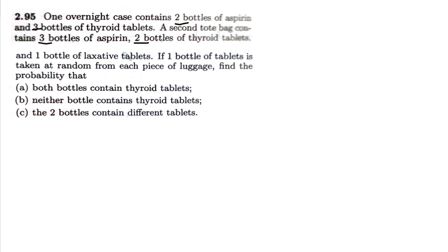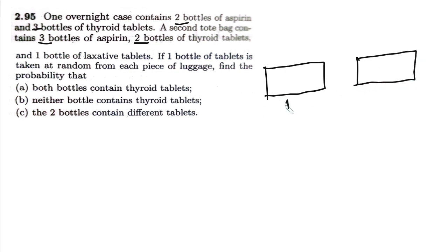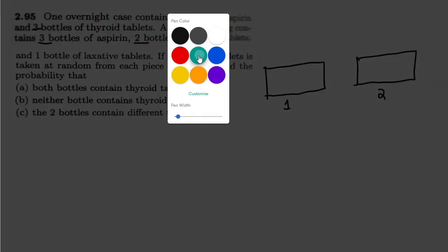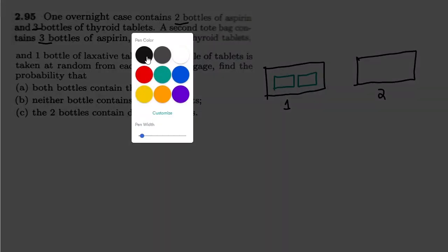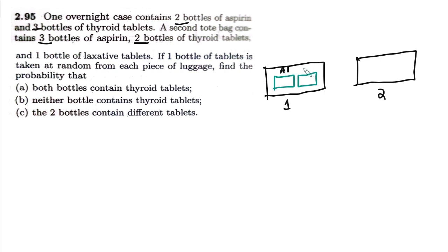So these are the two bags composed of these bottles of tablets. If one bottle of tablet is taken at random from each piece of luggage, we need to find the probability. Let me first explain the scenario: there are two bags — bag one and bag two. In the first bag we have two bottles of aspirin and thyroid tablets. Let me call them A1 for aspirin and T1 for thyroid.